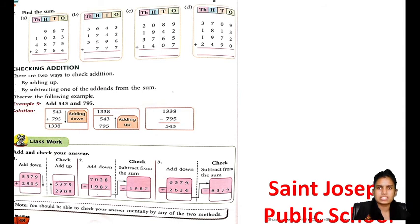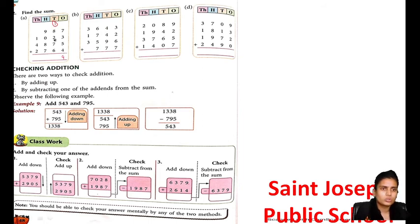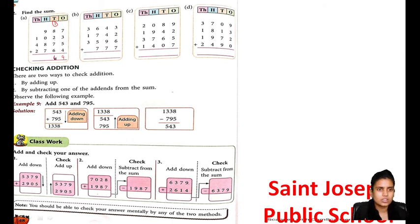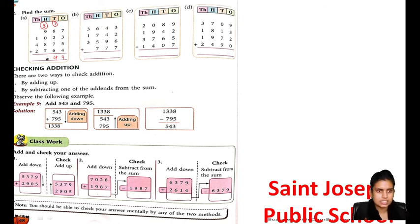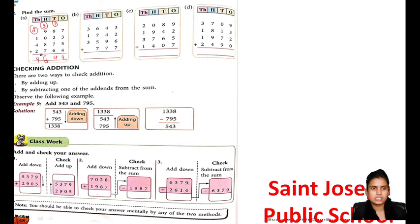Now come on — next page, page number 48, find the sum. 7 plus 3 is 10, 10 plus 5 is 15, 15 plus 4 is 19, 1 carry. 8 plus 2 is 10, 10 plus 7 is 17, 17 plus 1 is 18, 18 plus 6 is 24, 2 carry. 2 plus 8 is 10, 10 plus 9 is 19, 19 plus 7 is 26, 2 carry again. 8 plus 2 is 10, 10 plus 4 is 14, 4 plus 2 is 6, 6 plus 2 is 8, 8 plus 1 is 9. So the answer is 9649.